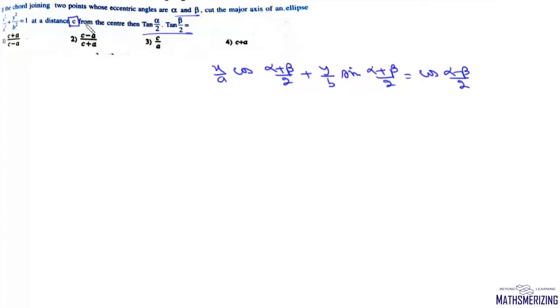intersects the x-axis at distance c from center, so it passes through (c, 0). Substituting x = c and y = 0, we get (c/a)cos((alpha+beta)/2) = cos((alpha-beta)/2).